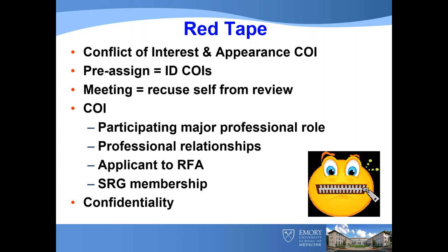A conflict of interest means you're on the grant or have a major professional role. If you are the PI, the grant will not go to the study section you're on. If somebody else from Emory submits a grant and I'm on the panel, I simply have to leave the room. If anyone from Emory submits a grant, or if Emory is a subcontract on that grant, I have to leave the room.